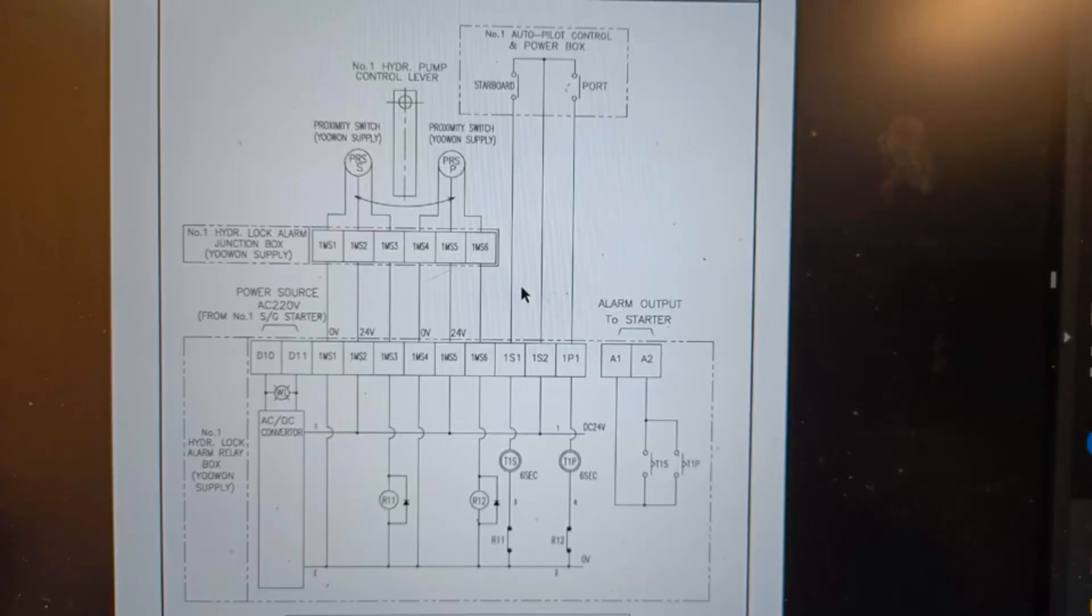This is the electrical diagram of the hydraulic lock alarm system of the steering gear. Here you can see two proximity switches - one for port side rudder movement detection and one for starboard side rudder movement detection. Suppose the command is given for port side, the rudder will move to the port side, and as per movement of the control lever...